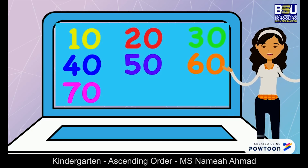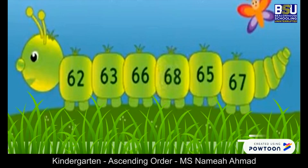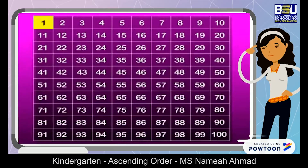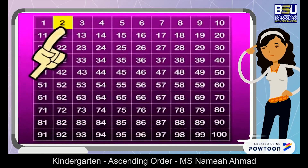First the ones-tens family will come, then the two-tens, three-tens, four-tens, and so on. Look, here is the caterpillar, but there is something wrong with this caterpillar. Can you tell me what that is? Yes, the numbers on this caterpillar are not in a sequence. But how do I sequence them? Do you have any idea?